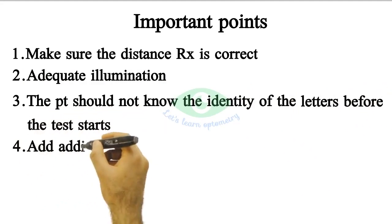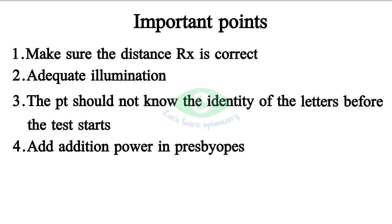The test can be done with addition power in presbyopes, and remember to reduce the power to get the final value. Add minus 4 diopters in high myopes to move the near point further away, and remember to add this value to get the final value.